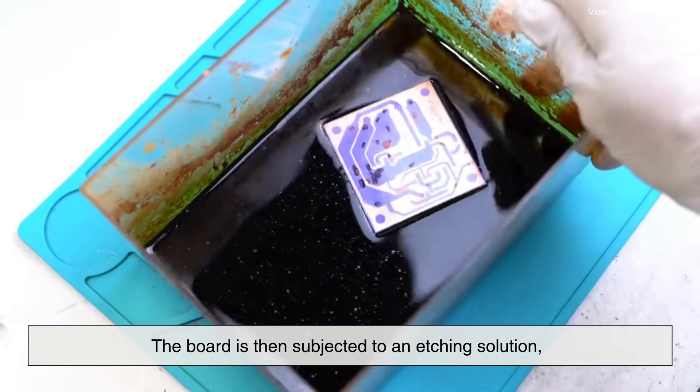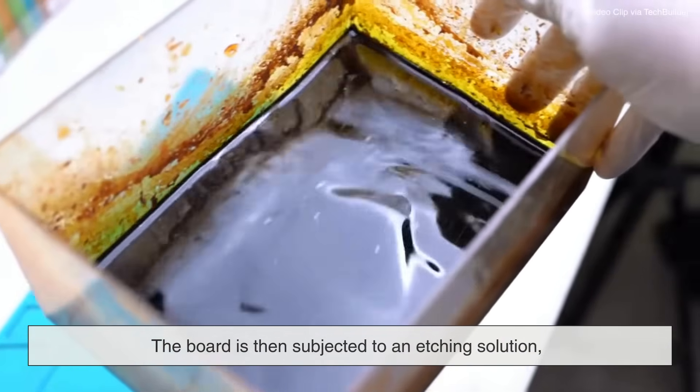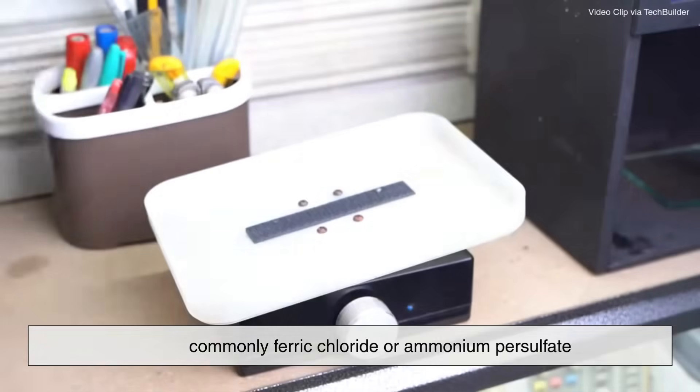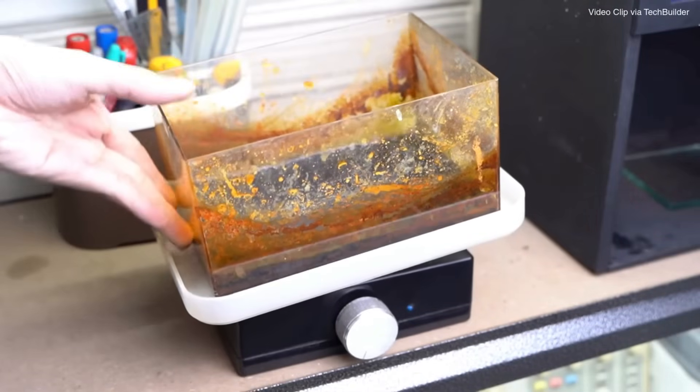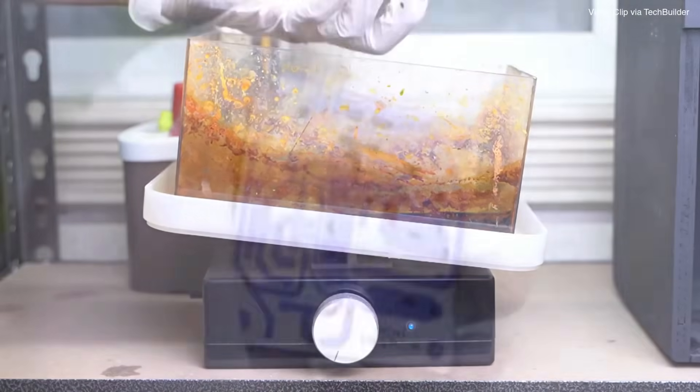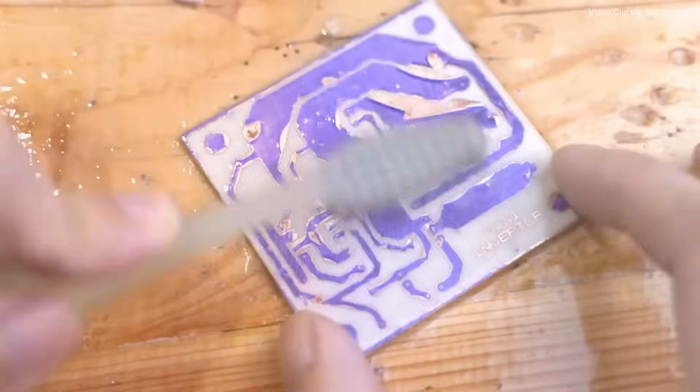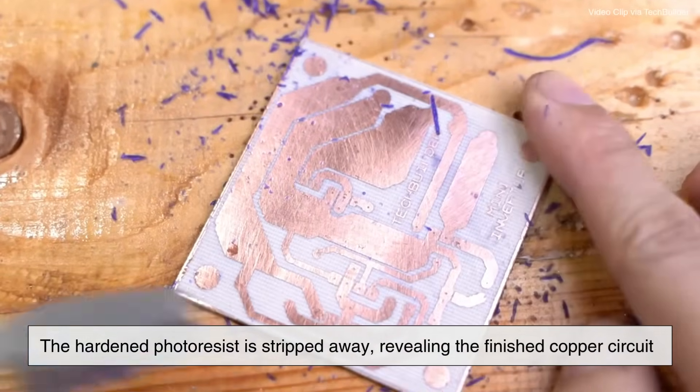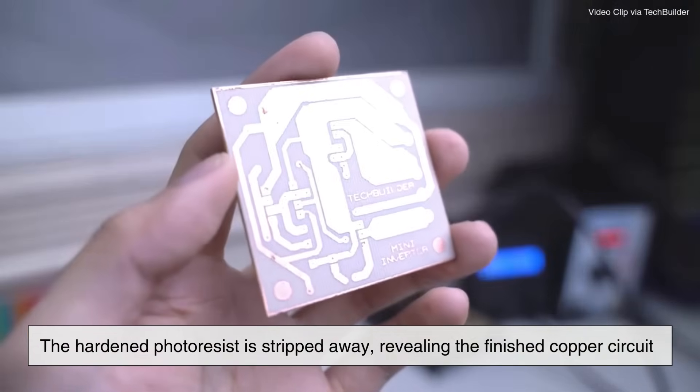The board is then subjected to an etching solution, commonly ferric chloride or ammonium persulfate, which dissolves the exposed copper areas, leaving only the desired copper traces protected by the photoresist. After etching, the hardened photoresist is stripped away, revealing the finished copper circuit.